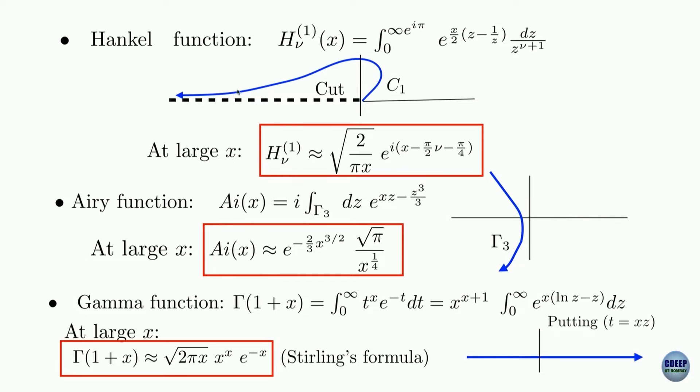And if one says that I want to know the value of the Hankel function as x becomes very large, that is called the asymptotic form of the Hankel function, and it looks like this: 1 over square root x multiplied by e to the power of i x minus some constant.